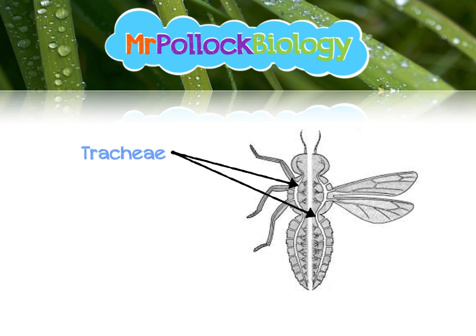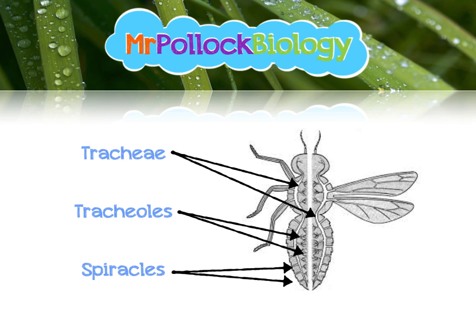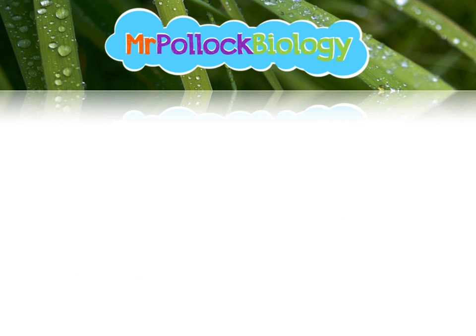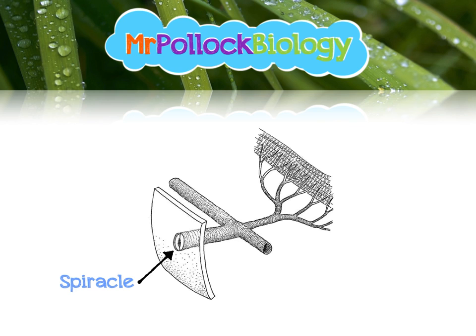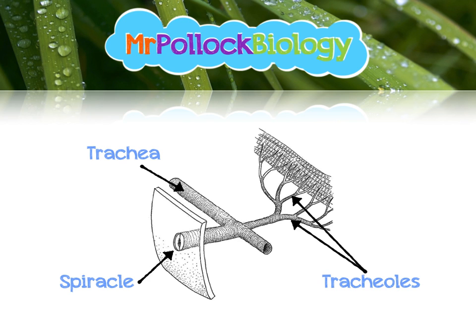We have the trachea — there are two tracheas down either side of the insect's body. We have the tracheals, which are smaller branch tubes that take the oxygen directly to the muscle tissues. And then on the outside of the body we have spiracles, which are a little bit like stomata in plants. Looking closer: the spiracle controls water loss. Here's the trachea, the main oxygen-carrying tube. Here are the tracheals — look how they branch towards the muscle fibres. At the bottom of those tracheals there will be a small amount of fluid that the oxygen can dissolve in, making diffusion to the muscle fibres a little bit easier.